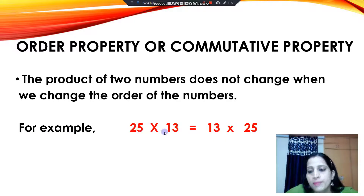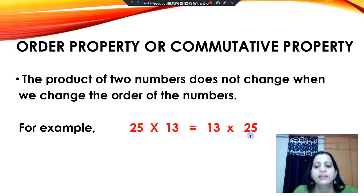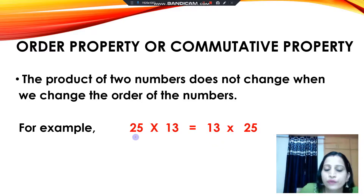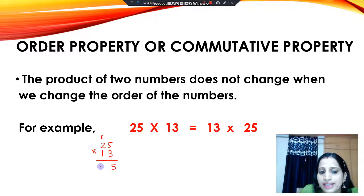For example, the two numbers are 25 and 13. Here we are multiplying 25 by 13, and then we are multiplying 13 by 25 — we have changed the order. So first we will multiply 25 by 13: 13 times 5 is 65, write 5 carry 6; 13 times 2 is 26, and 26 plus 6 is 32. So 25 multiplied by 13 gives us 325.